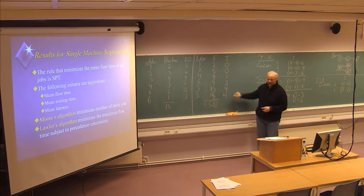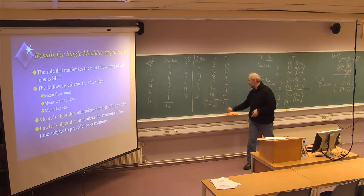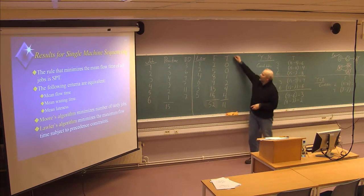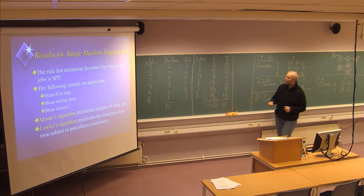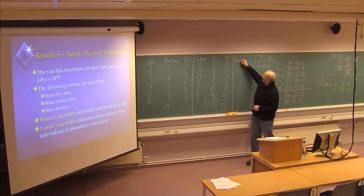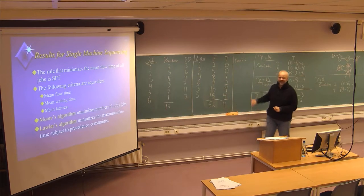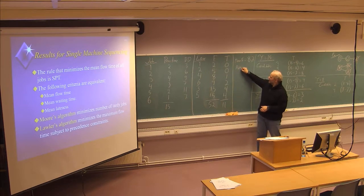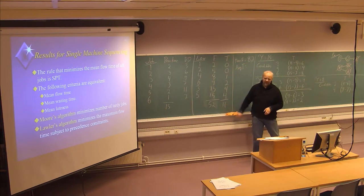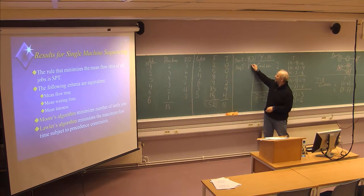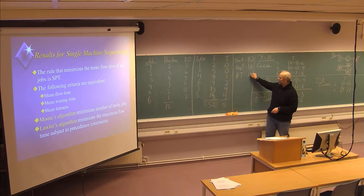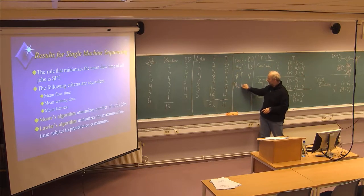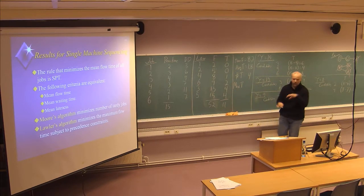The sum of tardiness will be 11. Looking at the measures: the mean flow time will be 52 divided by six, which is 8.7. The average tardiness is 11 divided by six, which is 1.8. The number of tardy jobs is four, and the maximum tardiness is four — two jobs are four days late.